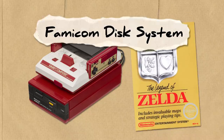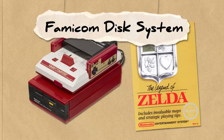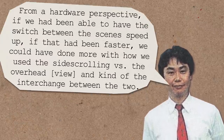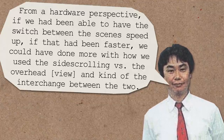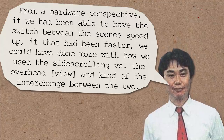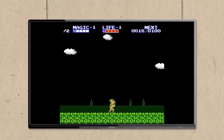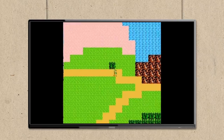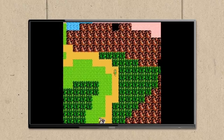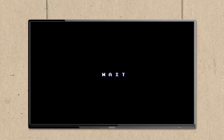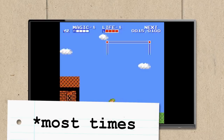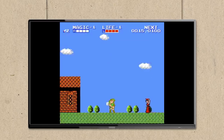Like Zelda 1, this game was to be released for the Famicom Disk System, which allowed games to be much larger in size, allowing for bigger, grander adventures. However, according to Miyamoto, from a hardware perspective: 'If we had been able to have the switch between the scenes speed up — if that had been faster — we could have done more with how we used the side-scrolling versus the overhead view and the interchange between the two. But because of the limitations on how quickly those scenes changed, we weren't able to.' Check out this video of the game being played on an original Famicom Disk System — they go to change from an overhead to a side-on perspective, and there's a 6 or 7 second long transition every time the viewpoint was changed, so the team didn't feel like they could switch the scene too often for fear of irritating players.